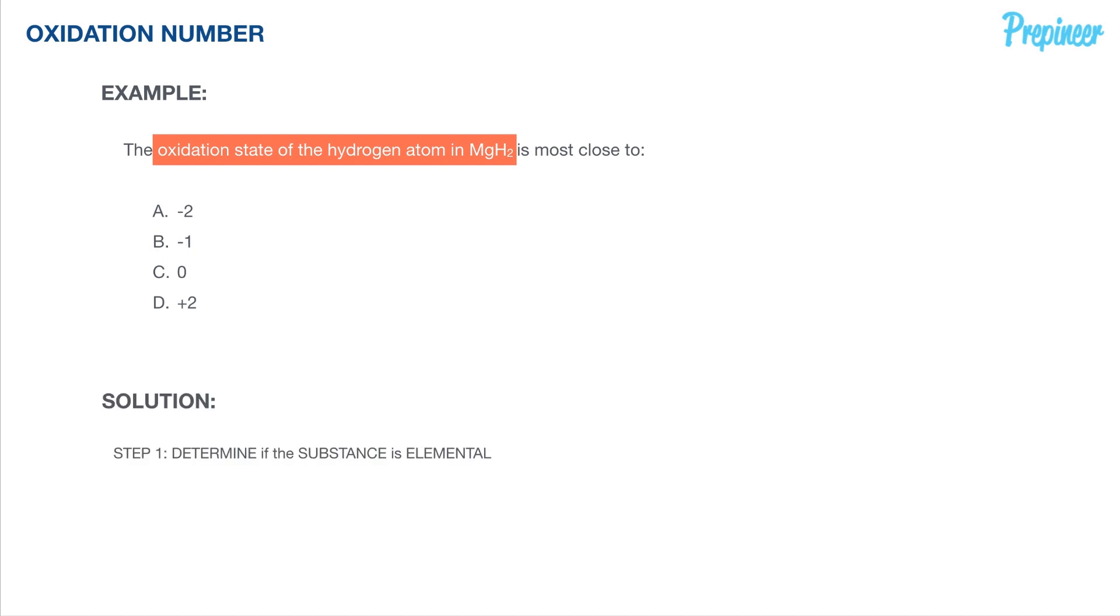Again, we will determine if the substance is elemental. If it's elemental, we stop there. However, if not, we move on to step two where we determine if the substance has a charge. Step three would be to identify the elements that have a specific rule using those rules we defined previously. And then finally, step four would be to use those general rules to define the oxidation state for each element.